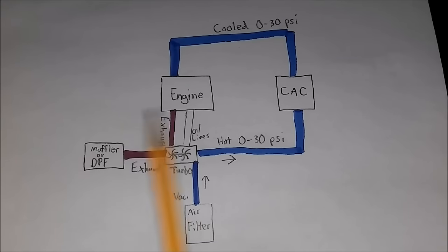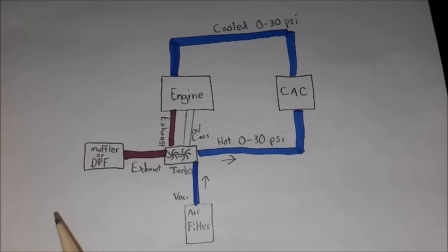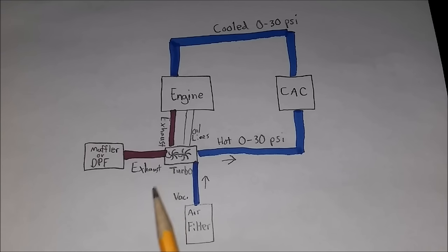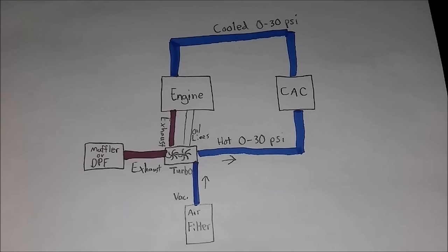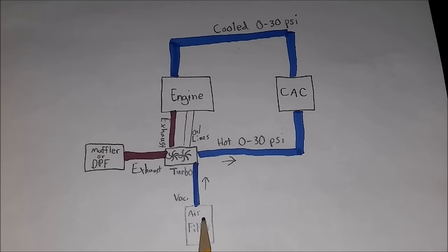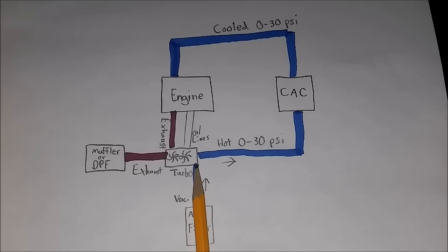The purpose of this diagram is to talk about how the system works and how to visualize it when troubleshooting. Starting with where the air comes in: air comes in, goes through your air filter, and then goes into your inlet turbine of your turbocharger. Components in the system include your turbocharger, engine, CAC, air filter, muffler, DPF, and oil supply and return lines. These lines represent your intake tubes and exhaust tubes.